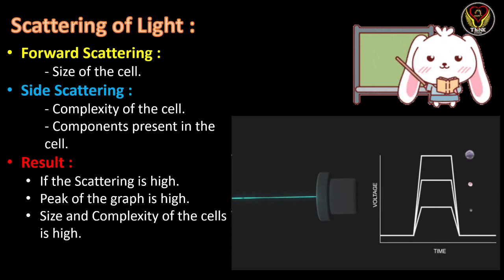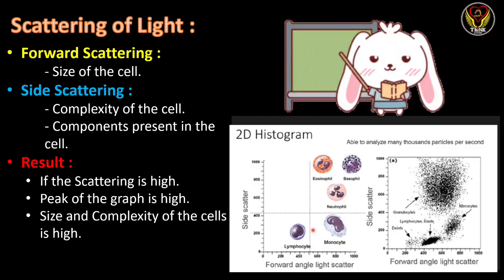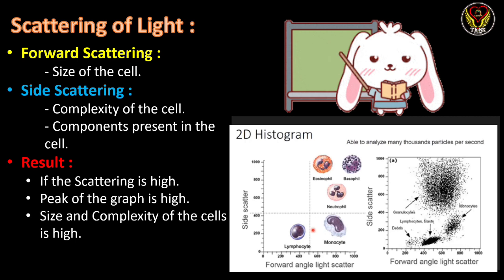The final results of flow cytometry are obtained in the form of a histogram. Two major things can be understood from this graph: size and complexity of the cells. The graph is separated into four major parts. As signals move toward the top, the cells are more complex; as they move toward the right, cells are larger in size. The top-right part contains cells that are large and complex, such as eosinophils, basophils, and neutrophils. The bottom-right contains cells larger in size but less complex, such as monocytes. The bottom-left contains cells that are smaller in size and less complex, which includes lymphocytes.